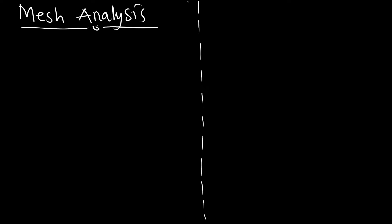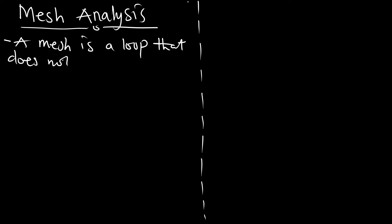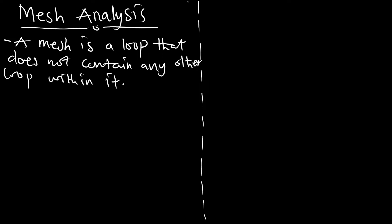In this episode we are going to talk about mesh current analysis — how to find current in a circuit using mesh analysis. First, what is a mesh? A mesh is a loop that does not contain any other loop within it. When we take one loop, we shouldn't find any other loop within it before we can apply the mesh analysis.